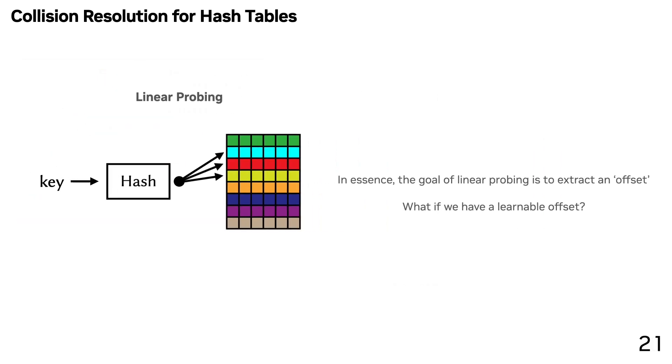The essence of linear probing is to find an offset that works. An offset isn't just an integer. So in the sphere of index learning, can we instead do offset learning? We set out to do exactly that, and we call it learned probing.